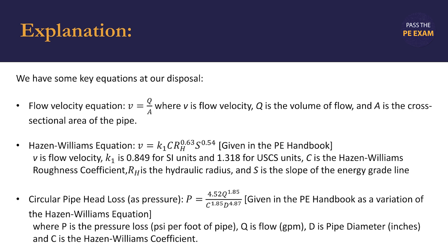The PE handbook also gives us a variation of the Hazen Williams equation, and that is the circular pipe head loss as pressure. This is the equation that we're going to use. P is equal to 4.52 times q raised to 1.85 divided by quantity c raised to 1.85 times d raised to 4.87. P is our pressure loss, so that is psi per foot of pipe. This is a dimensionless value. q is flow in gallons per minute, d is pipe diameter in inches, and c is the Hazen Williams coefficient.